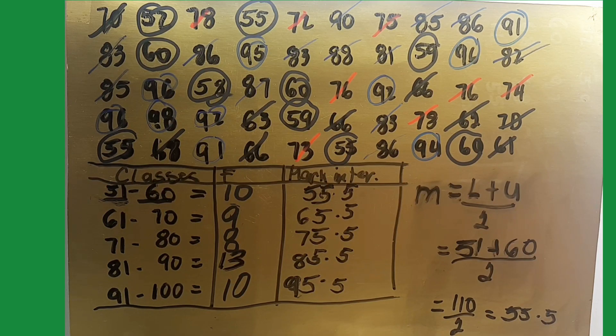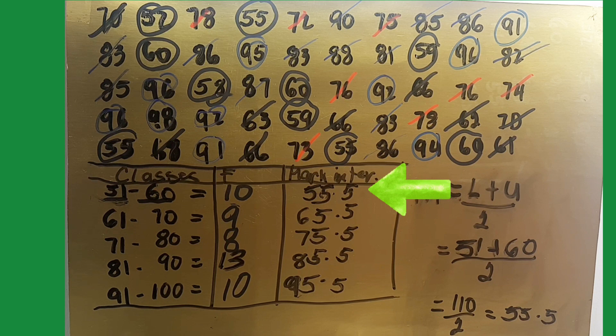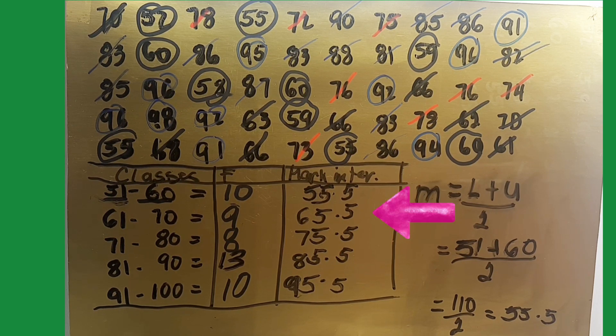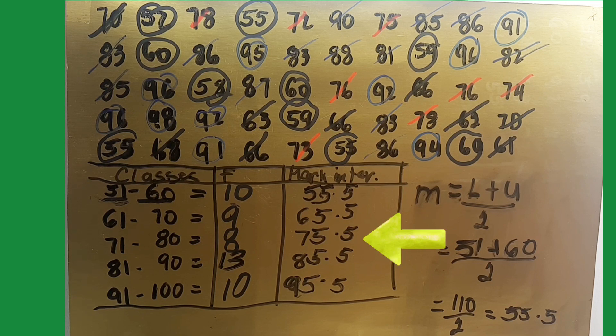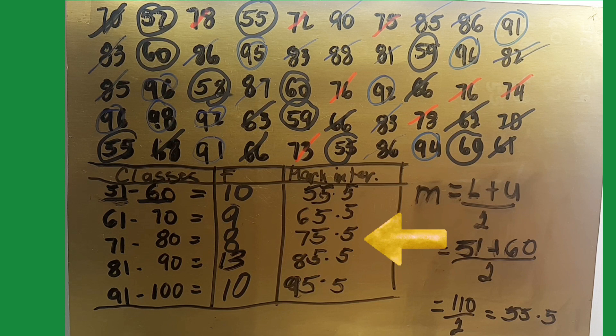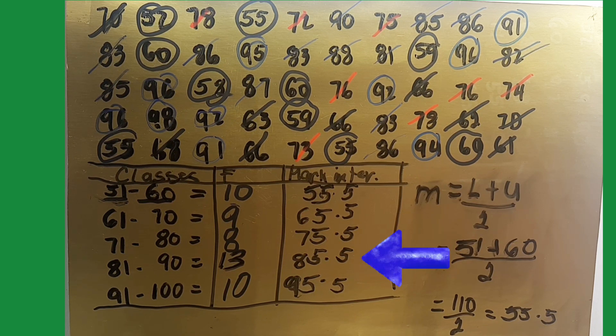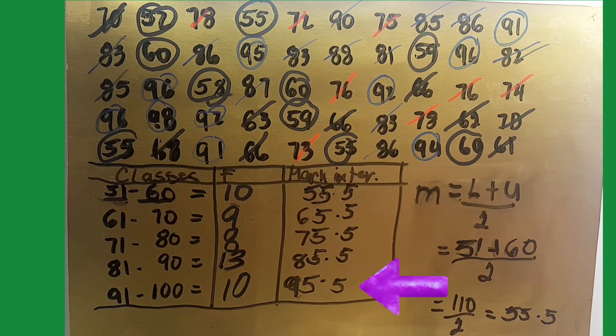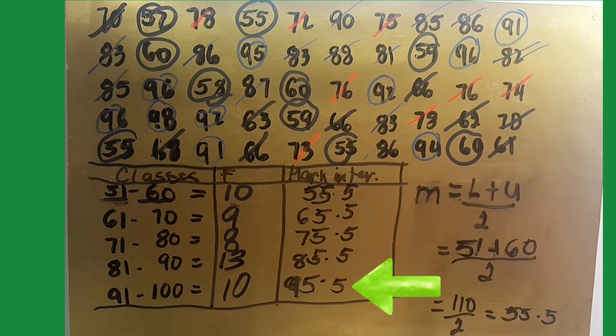So here are now the mid intervals. Class number 1 has 55.5. Class number 2 between 61 to 70 equals 65.5. Class between 71 to 80 has mid interval 75.5. Class 81 to 90 has mid interval 85.5. Class 91 to 100 has mid interval 95.5. Those are the mid intervals of each class.